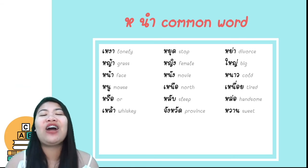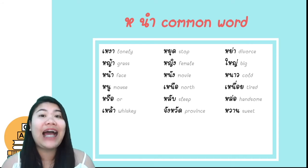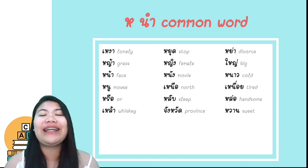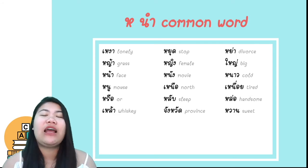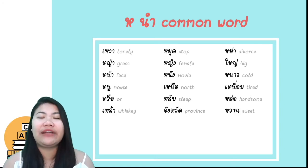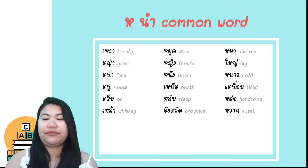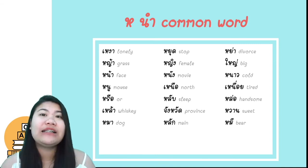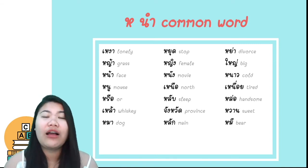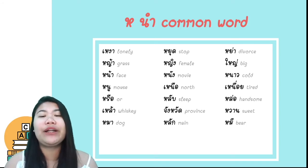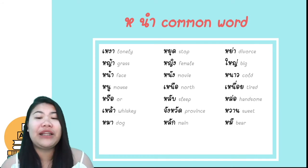The word for whiskey in Thai: เหล้า. จังหวัด. And the word for sweet in Thai: หวาน — make it rising tone. The word หมา, which means dog. And หลัก or ผู้ชาย, which means men.